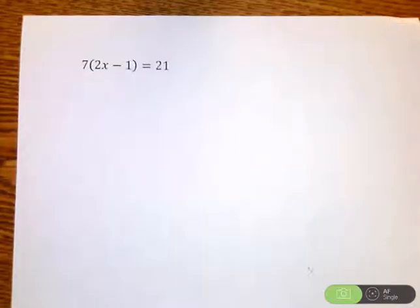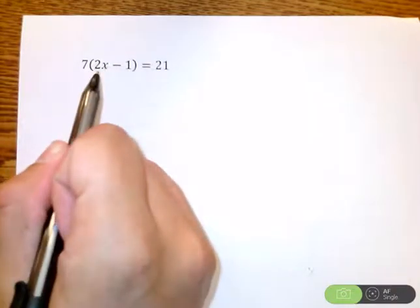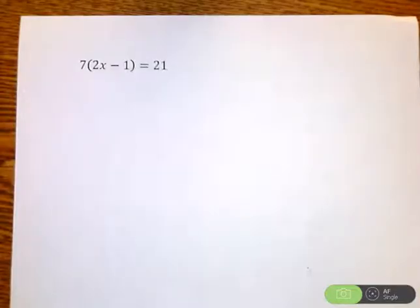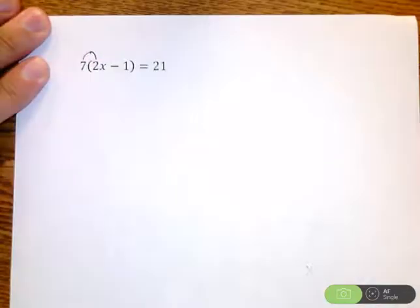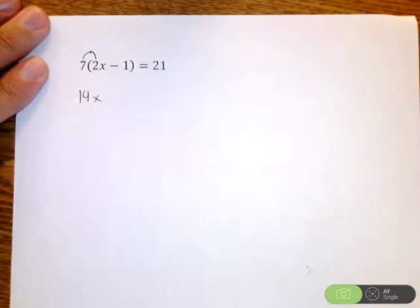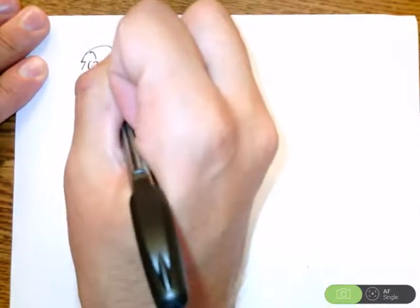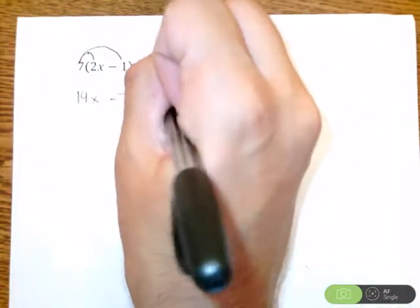Anytime I see parentheses, I immediately want to get rid of them. So when I see a number out front like 7 and I see parentheses, I'm looking at this thinking, you know what, I think I want to distribute this. Get rid of the parentheses so we can solve. So I'm going to take this 7, we're going to multiply it all the way through this parentheses. So I'm going to take 7 times 2x. So 7 times 2 is 14. Don't forget your x. But I don't just multiply there. I've got to take this 7 times the negative 1. 7 times negative 1 is negative 7.